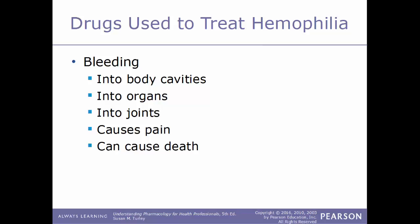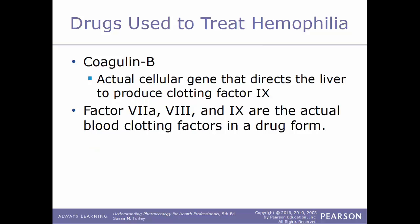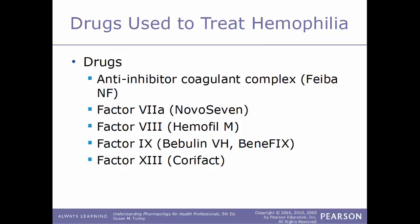One particular drug developed is called Coagulant B, which uses viral therapy to deliver the cellular gene that directs the patient's liver to produce clotting factor number 9. Clotting factors 7a, 8, and 9 are the actual blood clotting factors available in manufactured drug form. Examples of drugs that treat hemophilia: anti-inhibitor coagulant complex, also known as FEIBA NF; factor VIIa, sold under the name NovoSeven; factor VIII, also known as Hemofil M; factor IX, also known as Bebulin VH or BeneFIX; and factor XIII, known as Corifact. These last four are drug forms of the actual clotting factors normally found in a person's blood.